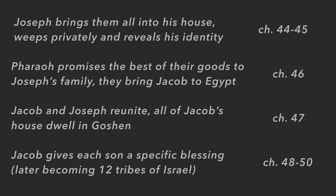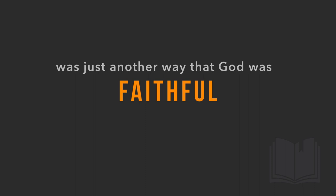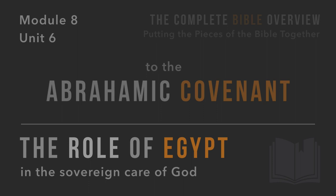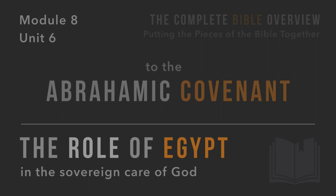They all go to a place called Goshen. Jacob gives each son a specific blessing, and later each son becomes one of the twelve tribes of Israel. Amazingly, Egypt was just another way God was faithful to the Abrahamic covenant. In our next unit, unit six, we'll take a quick look at the role of Egypt in the sovereign care of God.